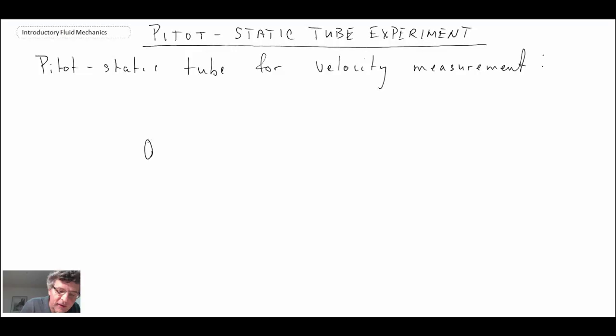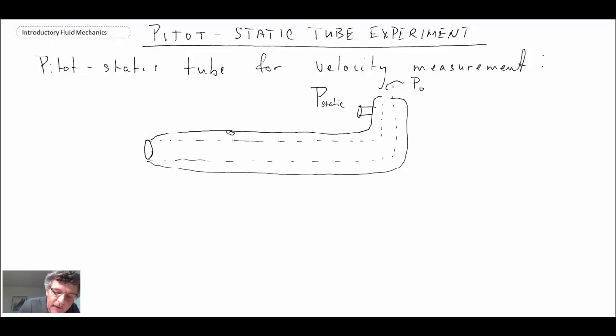The pitostatic tube involves a tube within a tube. We have an inner tube and an outer tube wrapped around that. In this outer tube there will be a tap that measures p-static, and this one measures p-total or p-naught. In the side of the tube there are holes that enable us to measure the p-static. And up here the flow is going to stagnate, where we're measuring p-naught where velocity goes to zero along a streamline.